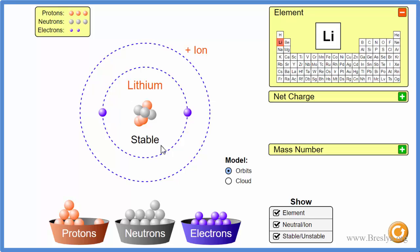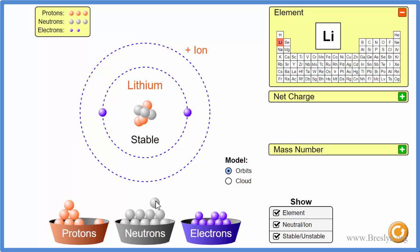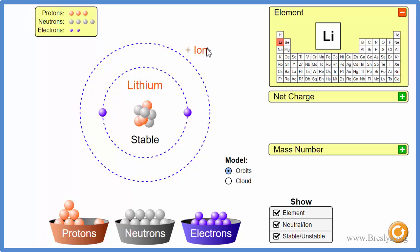This is a stable isotope of lithium — it's called lithium-6. If we add another neutron, we'll make lithium-7. Will it still be an ion? The answer is yes, it's still an ion. So isotopes can gain or lose electrons to become ions.